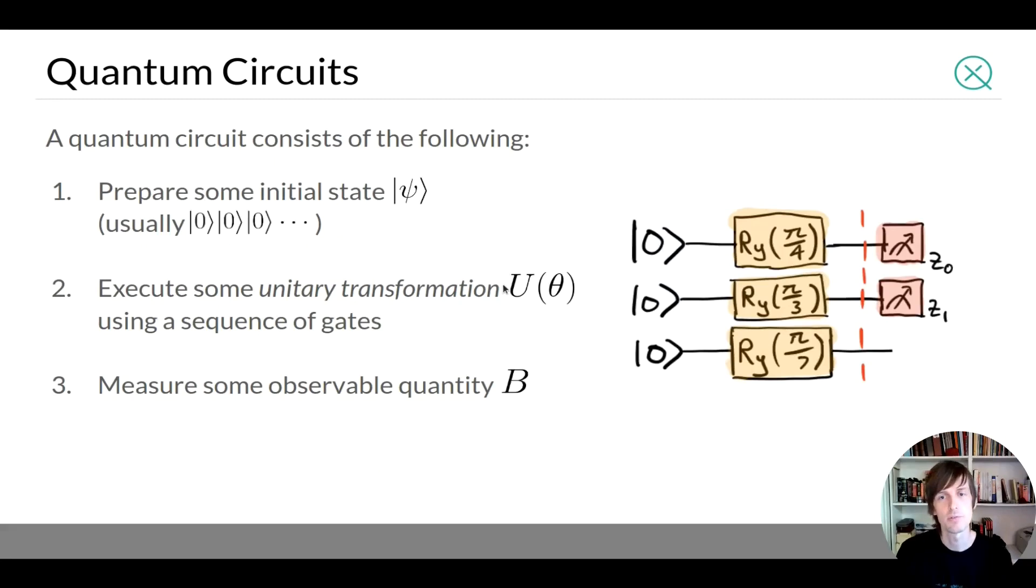Now the basic structure of quantum circuits is you start with some initial state psi. Typically this is an all zero state or a ground state. Then you execute some particular unitary transformation. Call it U. And U can be broken down into a sequence of individual gates. And this is the bulk of your circuit. And then at the final step you measure some observable quantity. Let's call it B. And this is the step that your quantum state is converted into classical information which is the measurement result.